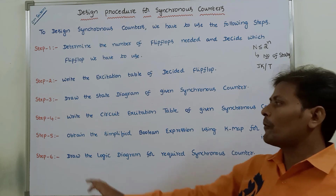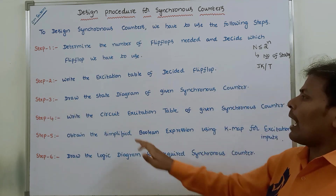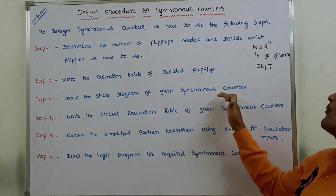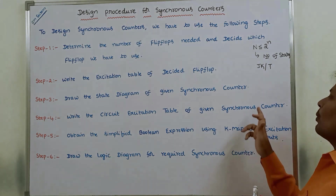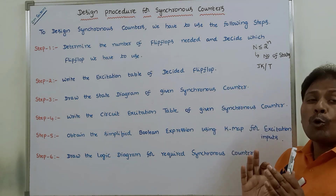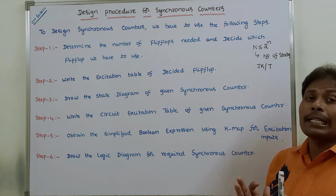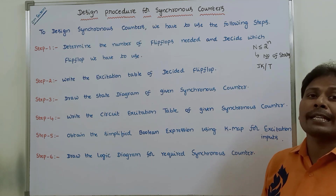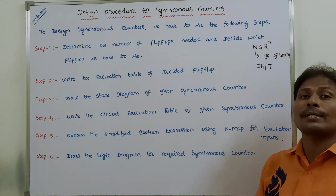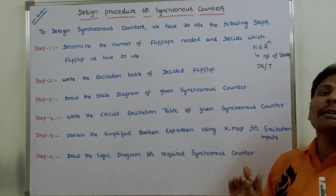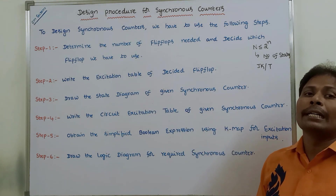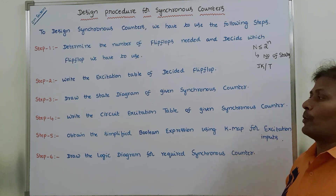Step 3: draw the state diagram of the given synchronous counter. Here we identify how many states are present in the given synchronous counter. Once we know the number of states, we draw the state diagram for the given synchronous counter.